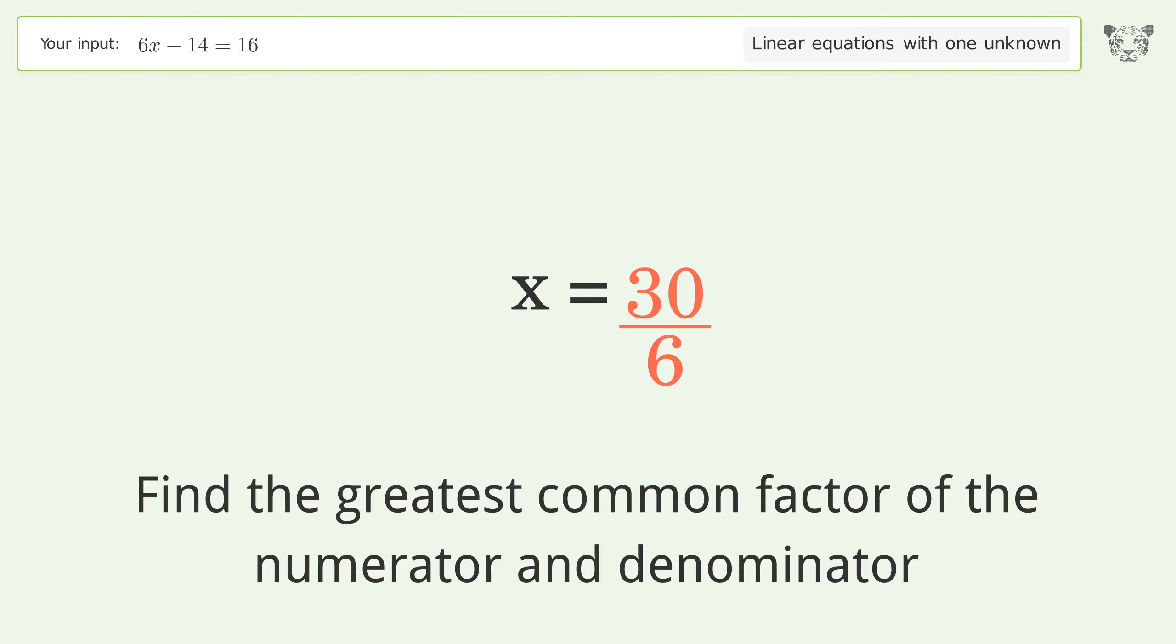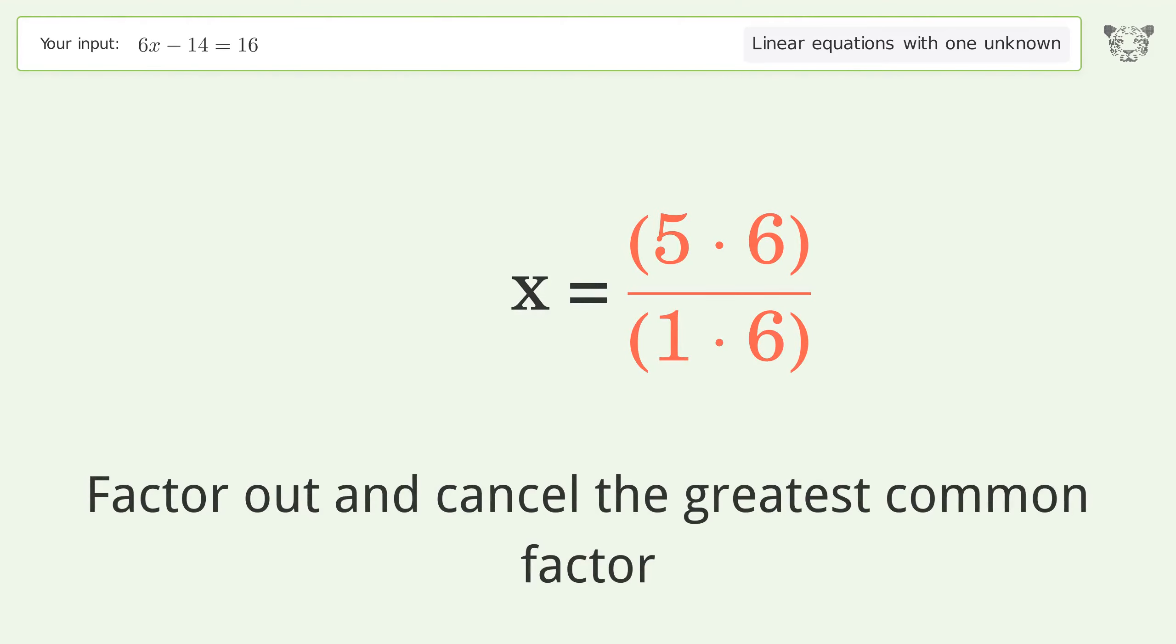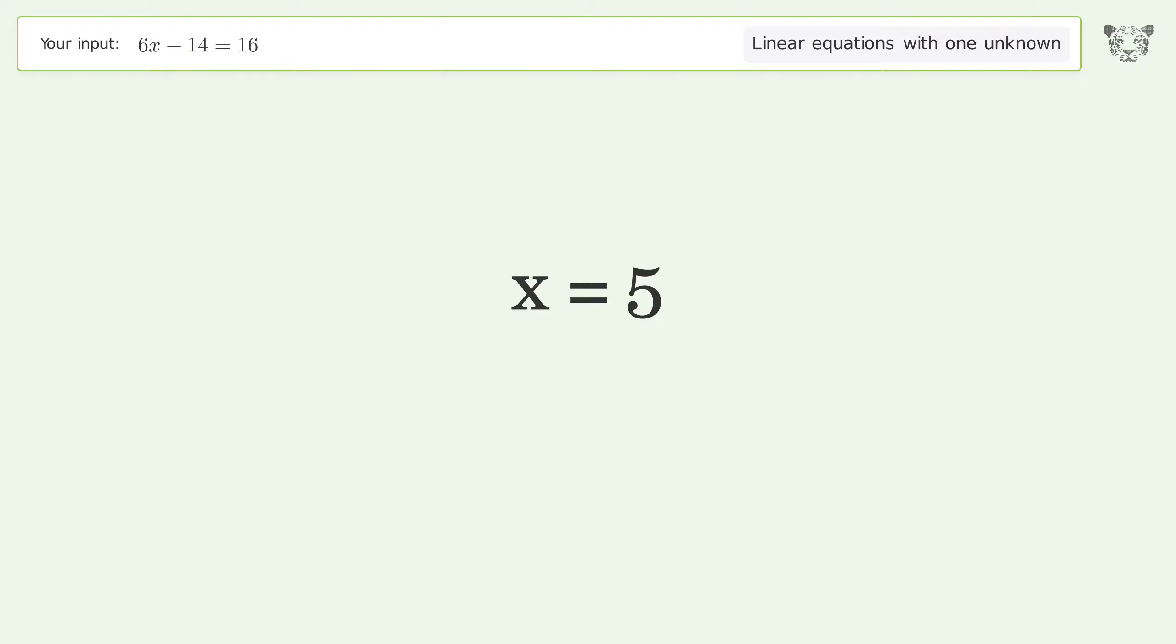Find the greatest common factor of the numerator and denominator. Factor out and cancel the greatest common factor. And so the final result is x equals 5.